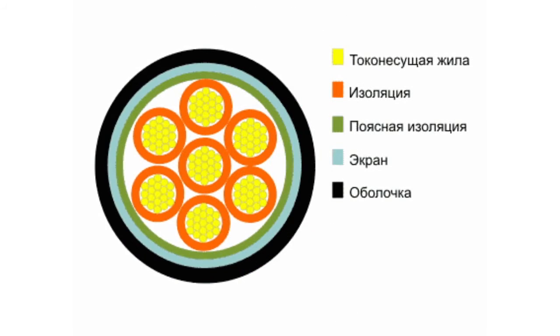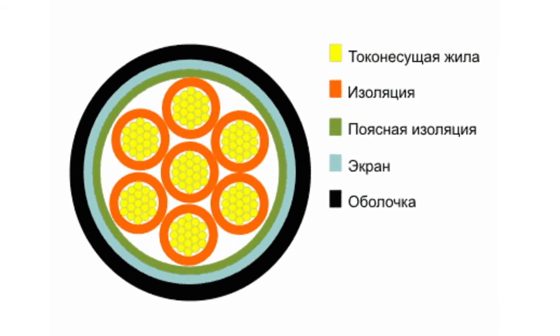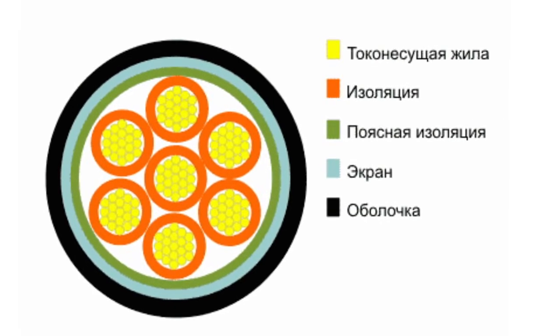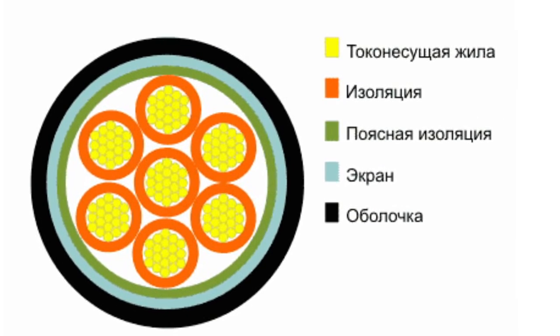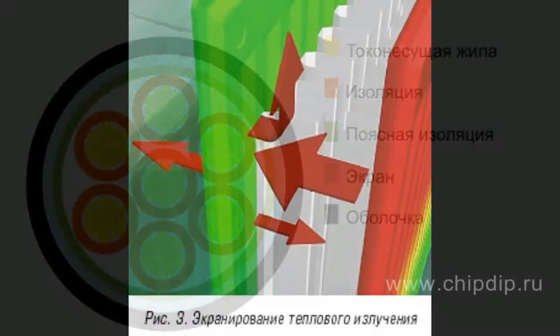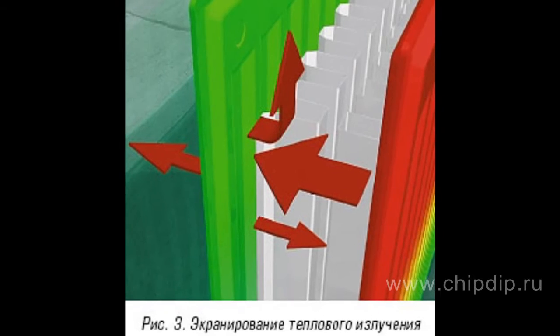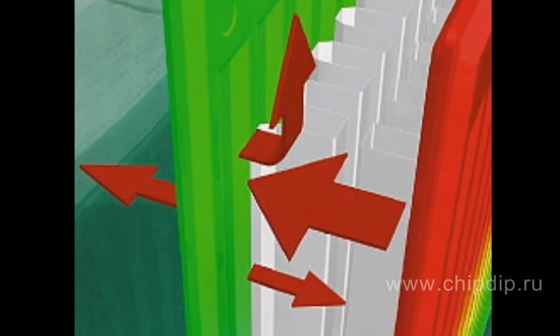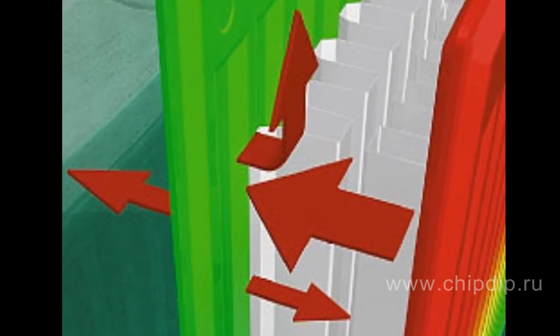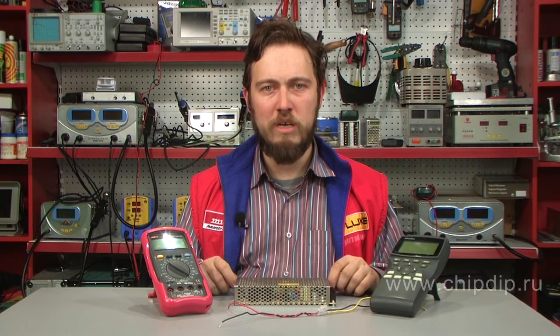Shielding is used to reduce the radiated electromagnetic field as much as possible. The choice of shielding material depends on whether the field is mostly electric or magnetic. In an average case, magnetic materials can absorb more electromagnetic energy, while good conductors such as copper and aluminium have excellent reflecting properties.